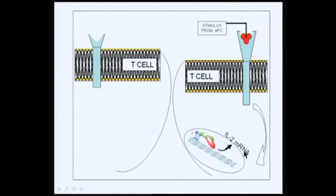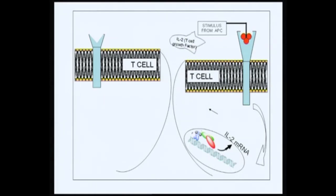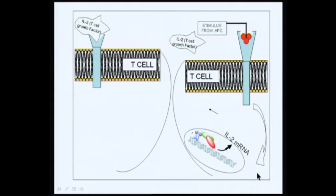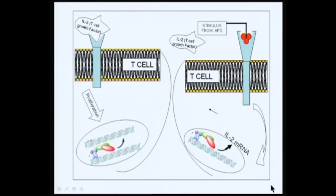IL-2 mRNA is transcribed from the IL-2 gene, and this IL-2 mRNA results in the production of IL-2, which is also a T cell growth factor. Being a T cell growth factor, it is secreted outside into the medium, and more of it is produced. The T cell factor then goes and binds to its own receptor on a neighboring T cell or the same T cell that produced it. This binding to the IL-2 receptor transduces a signal that results in the proliferation of the cell by synthesizing DNA.